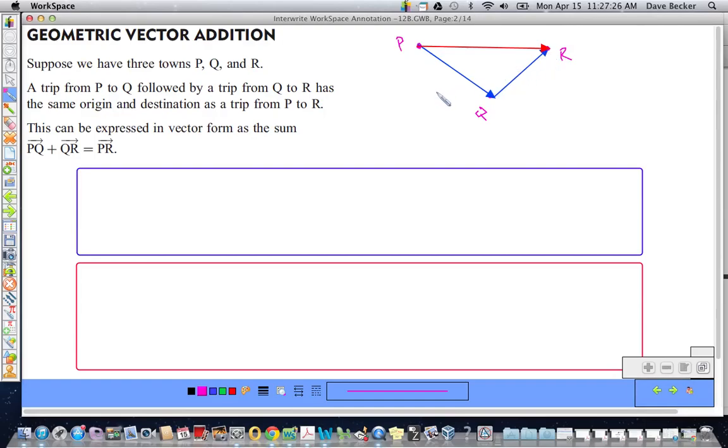And so, from P to R is the starting point of vector PQ and the terminating point or the terminal point of vector QR.